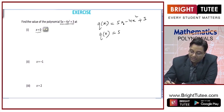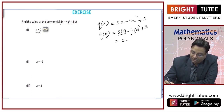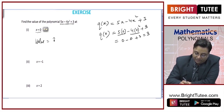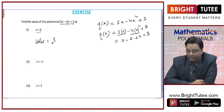q of 0 — if I replace x by 0 everywhere — this will be 0, this will be 0 plus 3, so it is equal to 3. The value of the polynomial will be 3.